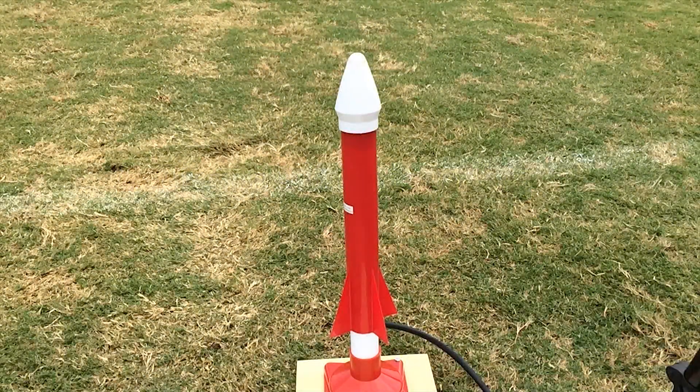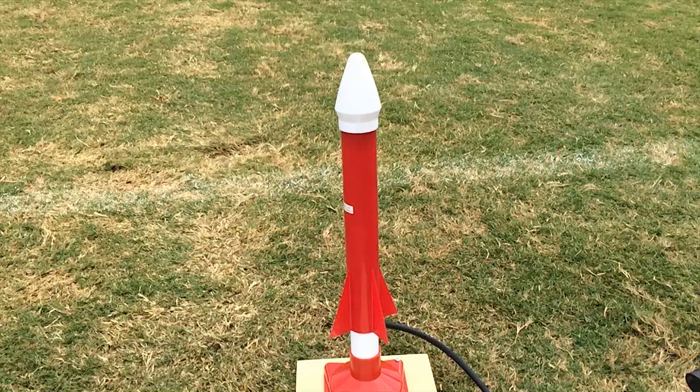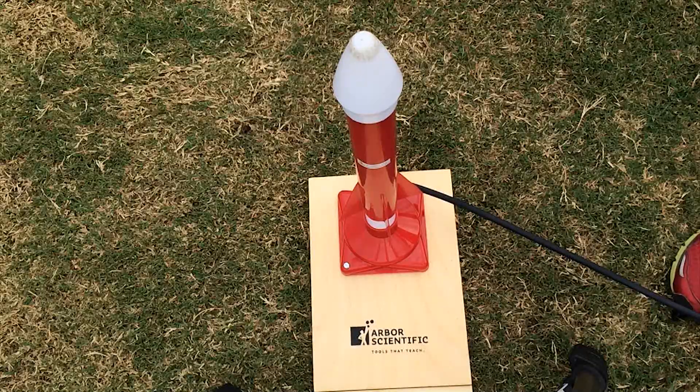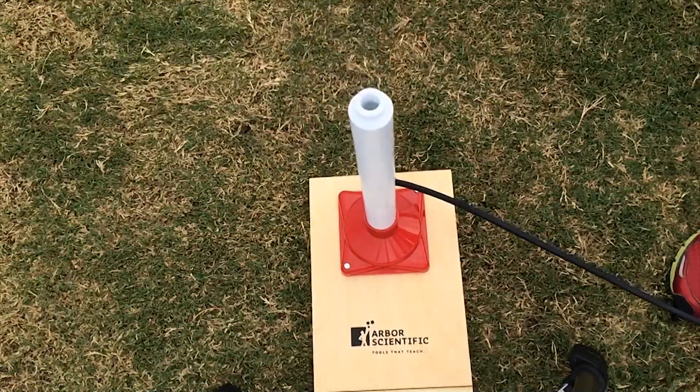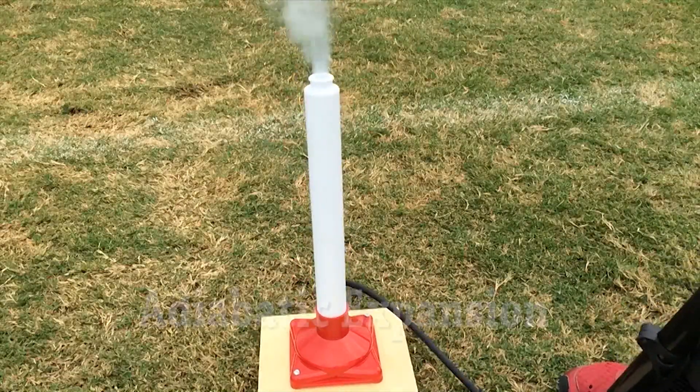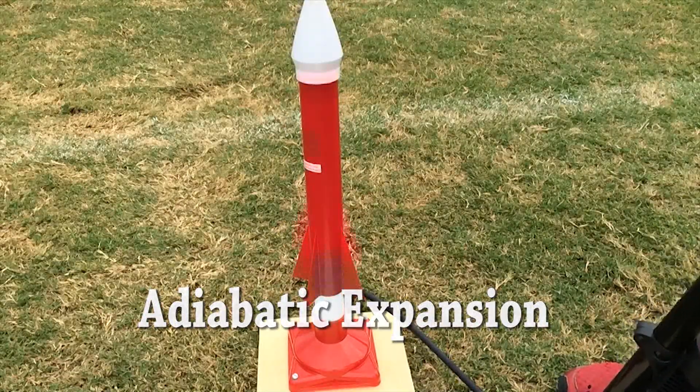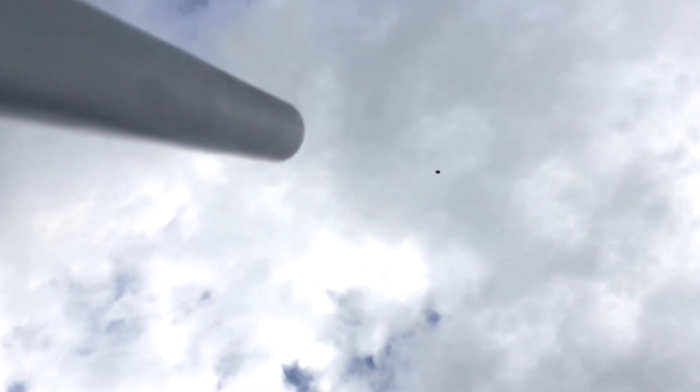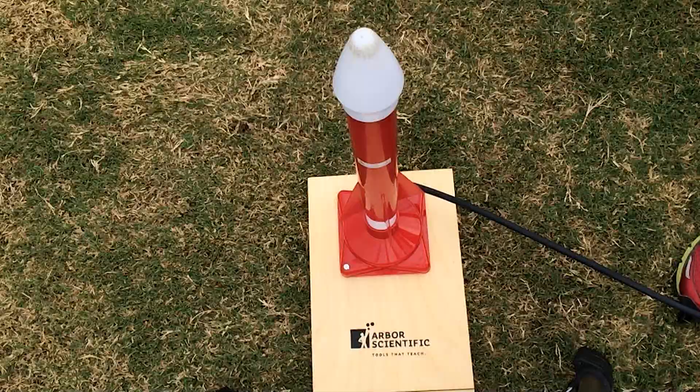When you launch the projectile, you might have noticed some clouds appearing at the base. This is the humidity in the air being condensed into a vapor due to the rapid temperature change. When a gas expands rapidly, it cools. This is called adiabatic expansion. It's an important idea in thermodynamics, and this is a really good example of it. You probably have seen it when you open a champagne bottle or even a soda. This effect also demonstrates that the projectile is safe and chemical free.